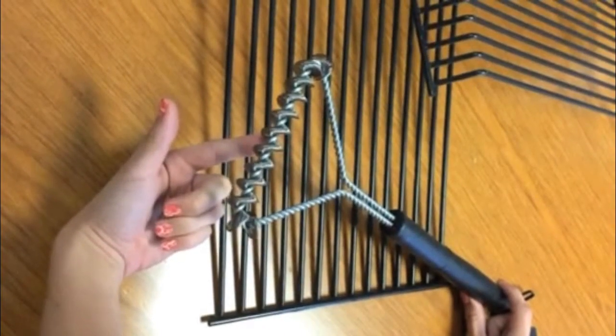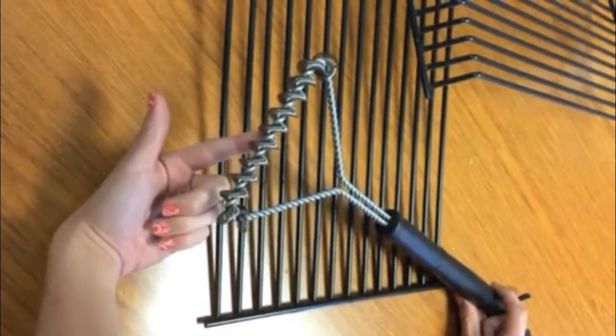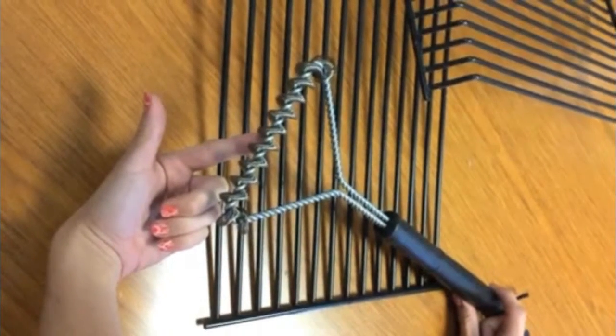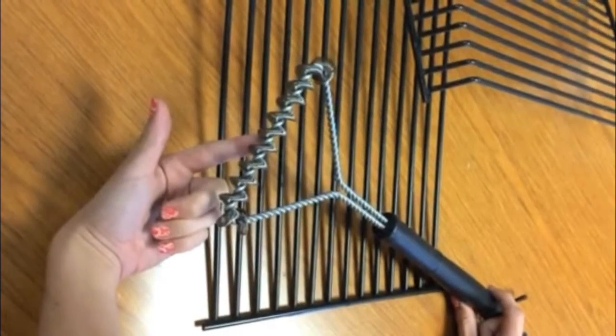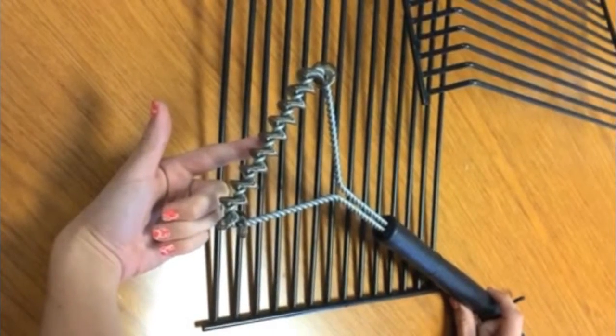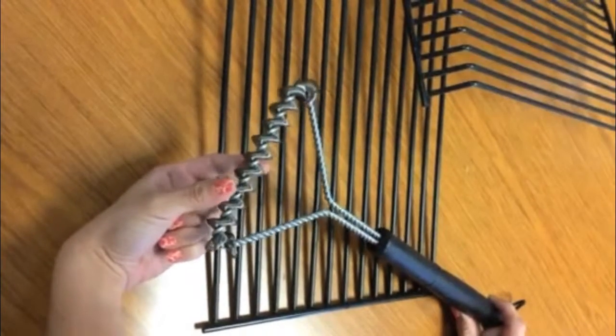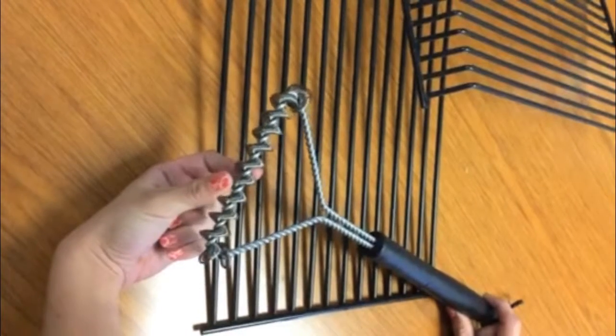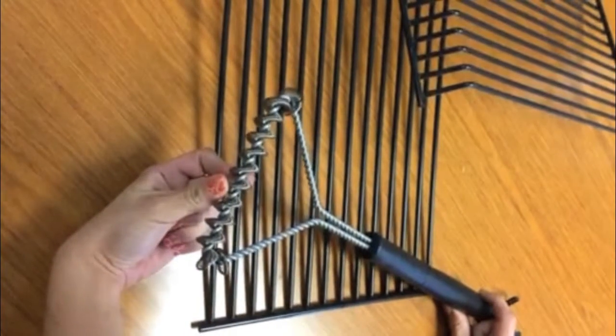had a customer ask if this was safe to use on porcelain-coated cooking grill grids. What we usually recommend for porcelain-coated cooking grids is that you have a brass bristled brush. The brass is softer than the porcelain,